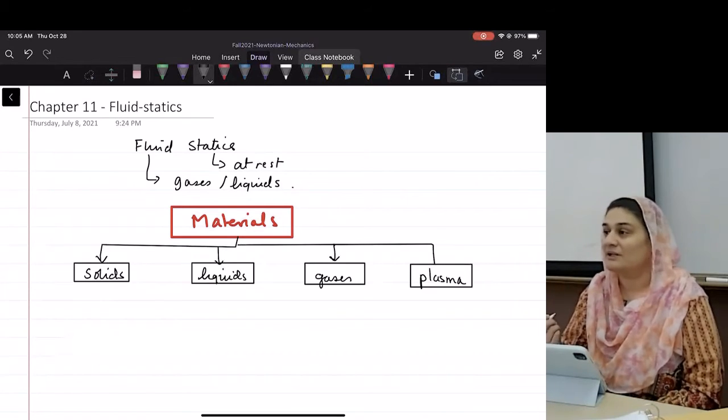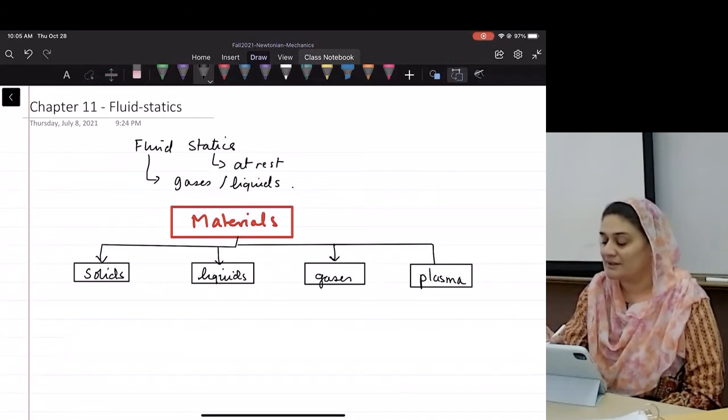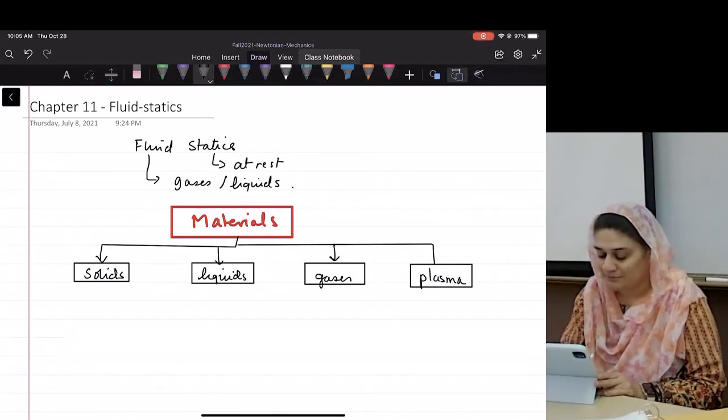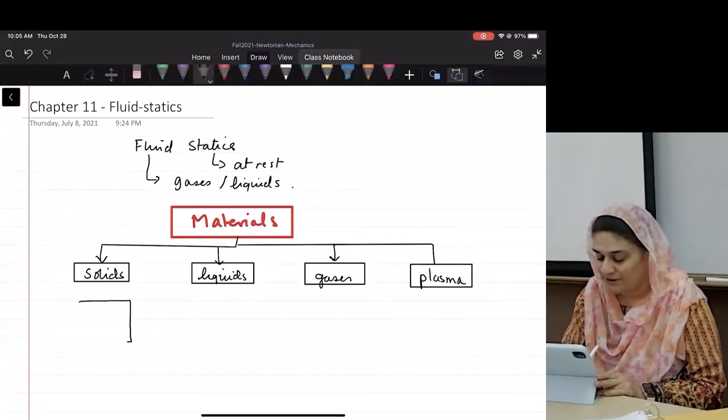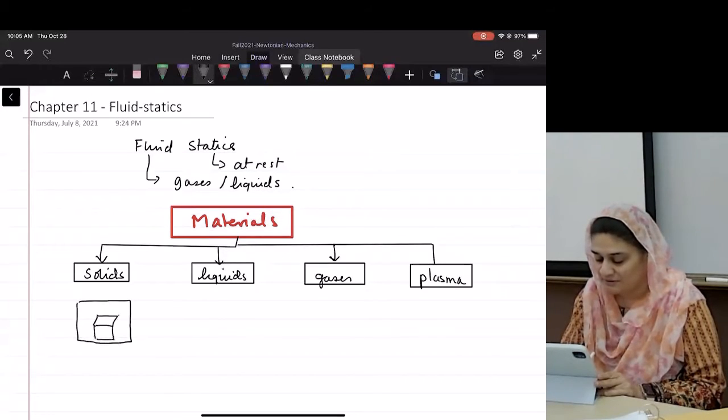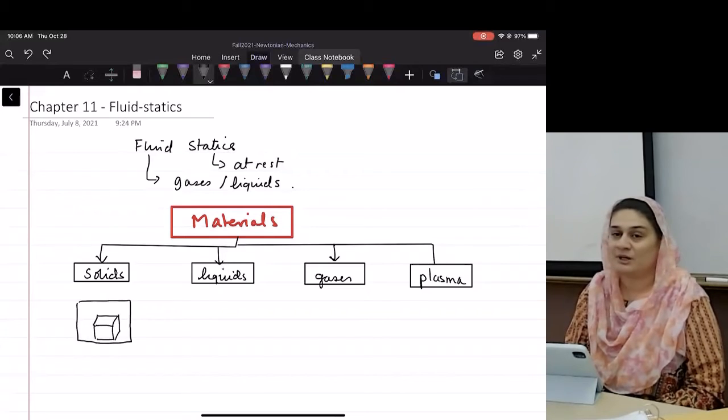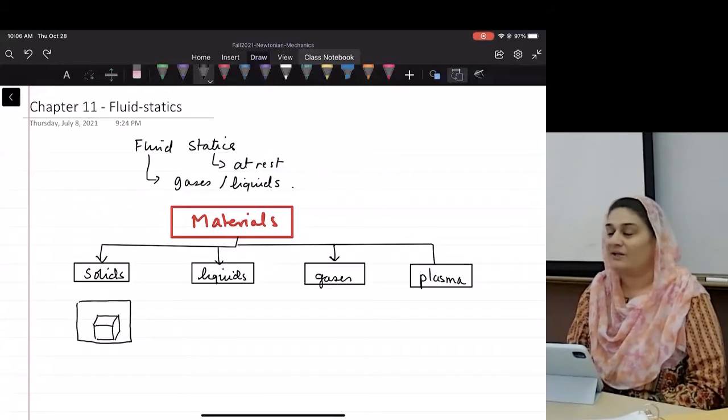So how do you define what a solid is? A solid is any object that, when I put it into a box, it stays that object. It doesn't change its shape depending on what box I put it into.